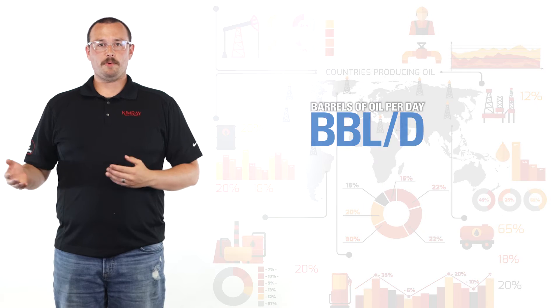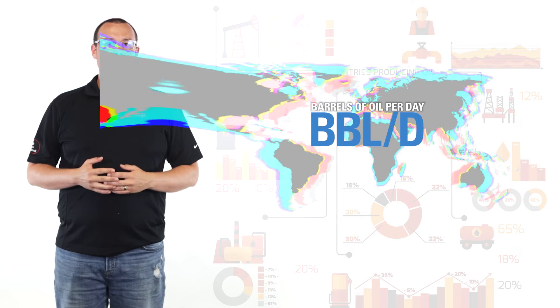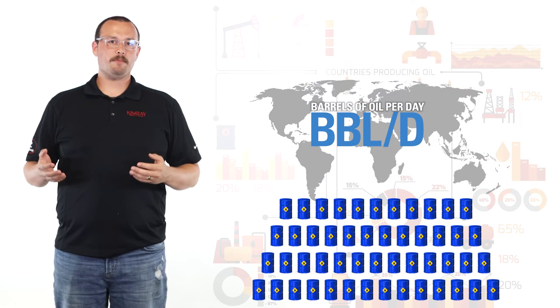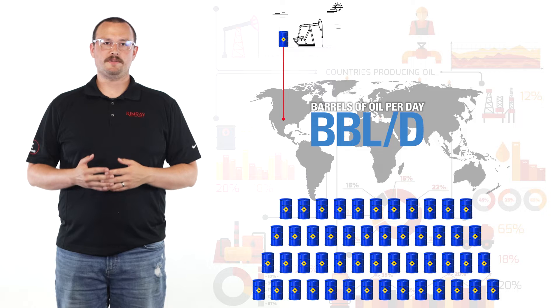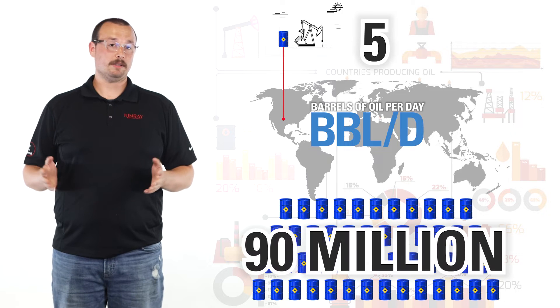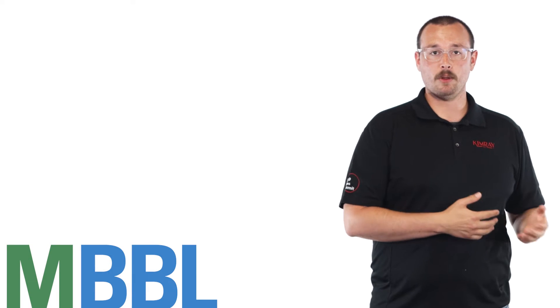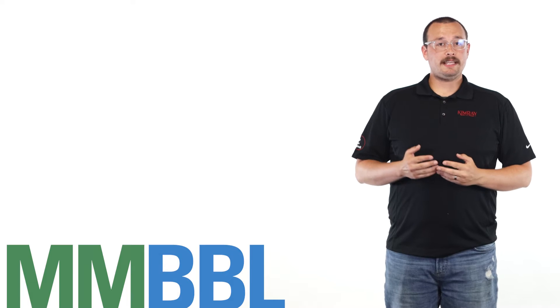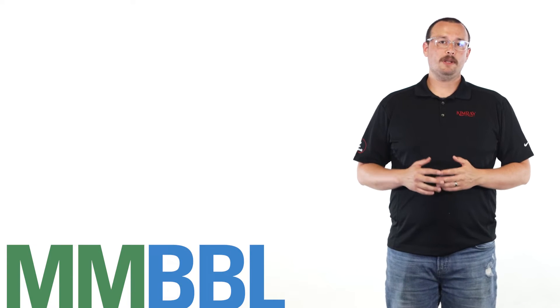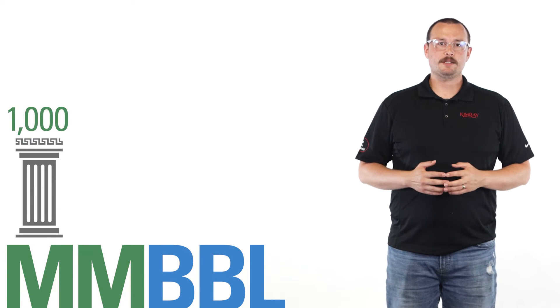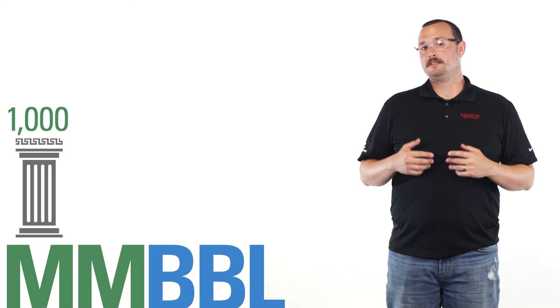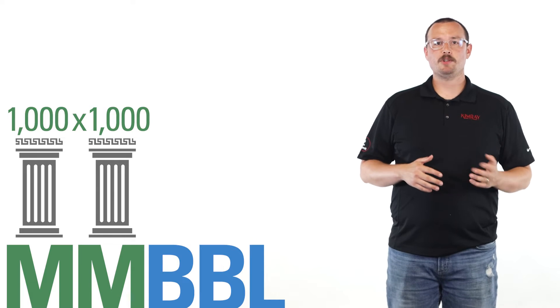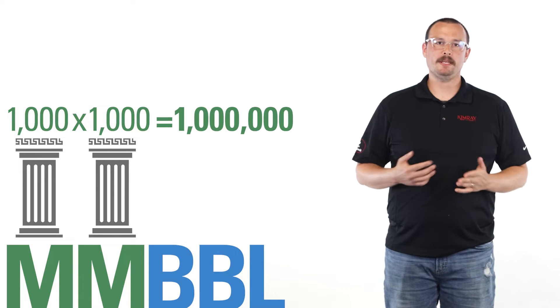The number for barrels of oil per day can refer to anything from a global amount produced to a single production field, so the numbers can vary wildly. You'll commonly see barrels per day written as MBBL or MMBBL. In the oil and gas industry, the Latin numeral M stands for 1,000, thus MM is M multiplied by M, or 1 million.